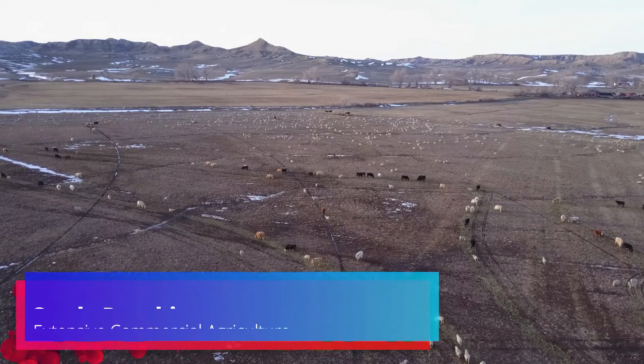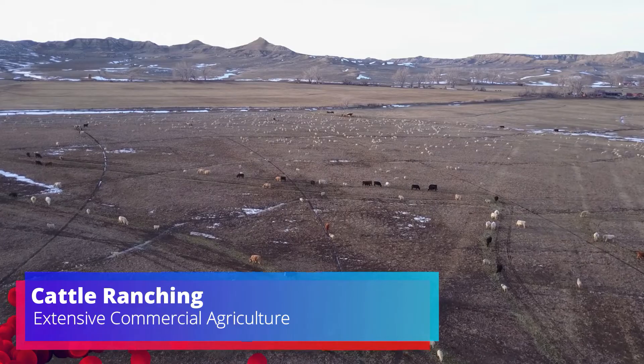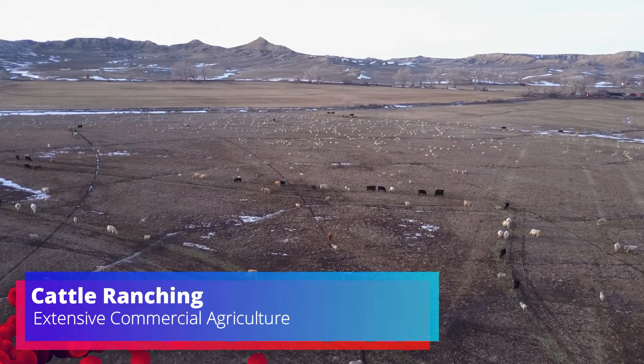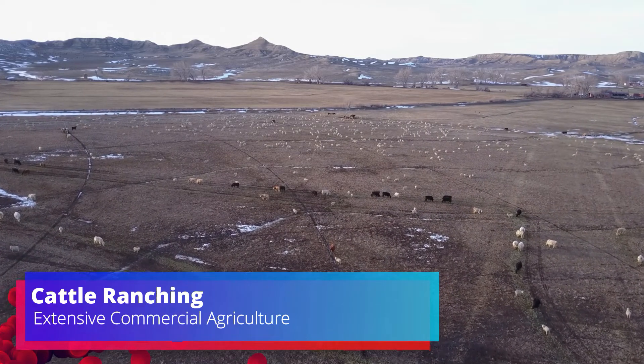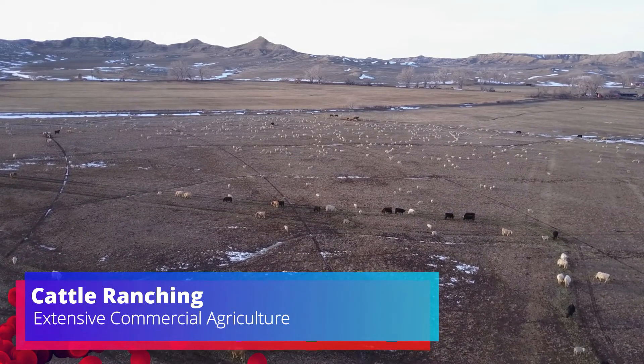On the other hand too, for the subsistence part, we can see that the primary production of food here is for consumption, not for sale, which would make it subsistence agriculture and not commercial. If we look at cattle ranching, we can see that this type of agricultural production requires a lot of land and very few machines. Most of the work is done by hand. That makes this type of agricultural production classified as extensive.